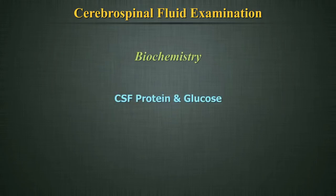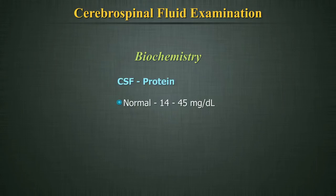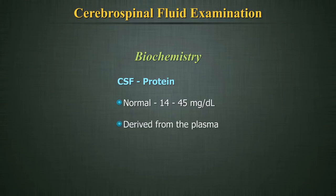Biochemistry: CSF glucose and protein are measured in the same way as done in serum samples. Look for special instructions from the manufacturer regarding programming or calibrators. Normal CSF protein concentration is 14 to 45 mg per decilitre — it is derived from the plasma. Note that this result is in mg per decilitre rather than g per decilitre as in serum protein determination.